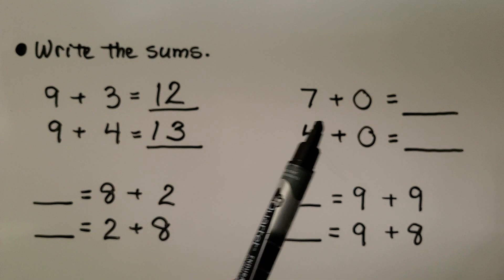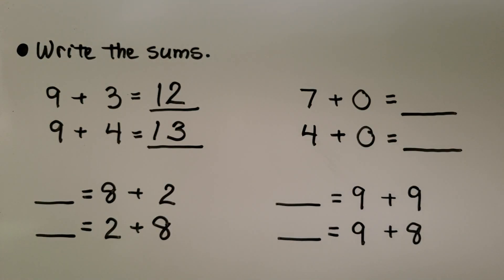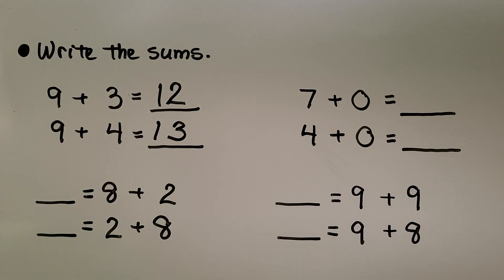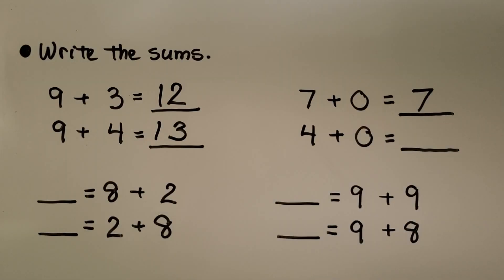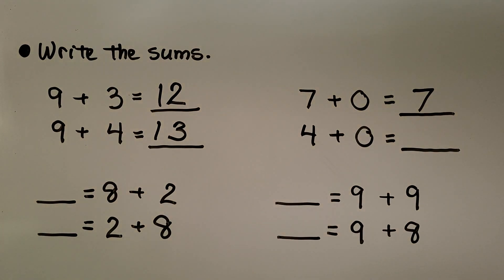Here we have 7 plus 0. Remember, when we add 0, it doesn't change the number. It's the same amount. So 7 plus 0 is equal to 7. And 4 plus 0 is equal to 4.